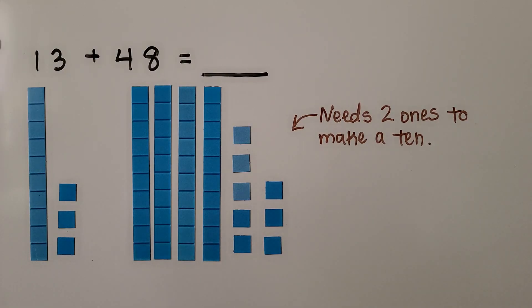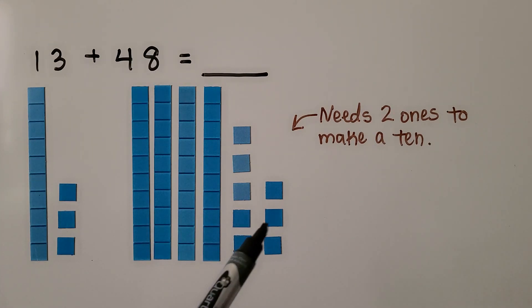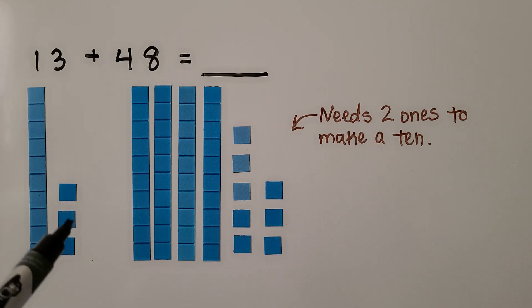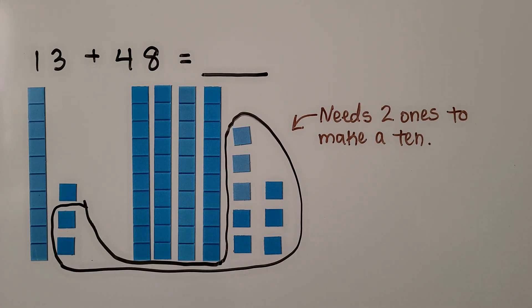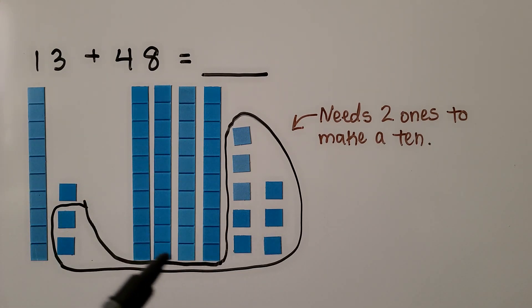Here we have 13 plus 48. We have one ten and three ones. Here we have four tens, eight ones. The eight ones needs two ones to make a ten. We can group ten ones using two from over here. Now we have one, two, three, four, five, six tens with one left over. That means 13 plus 48 is equal to 61.